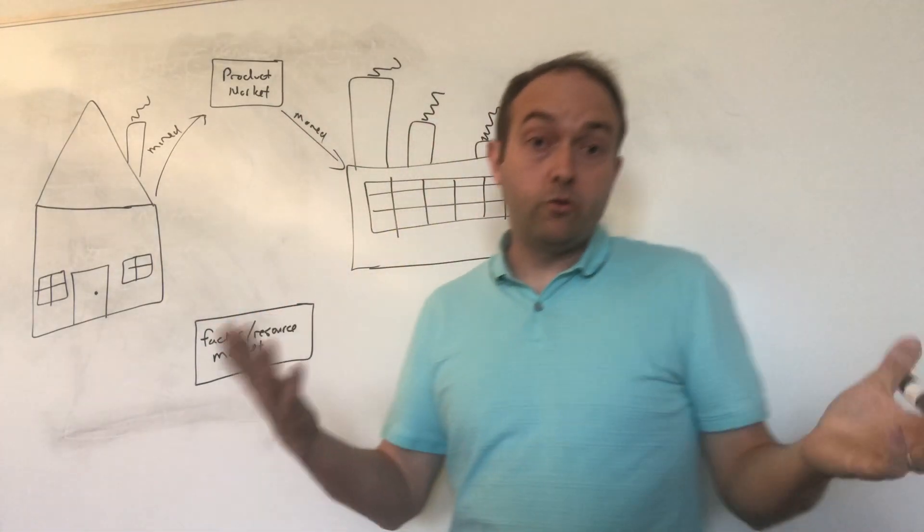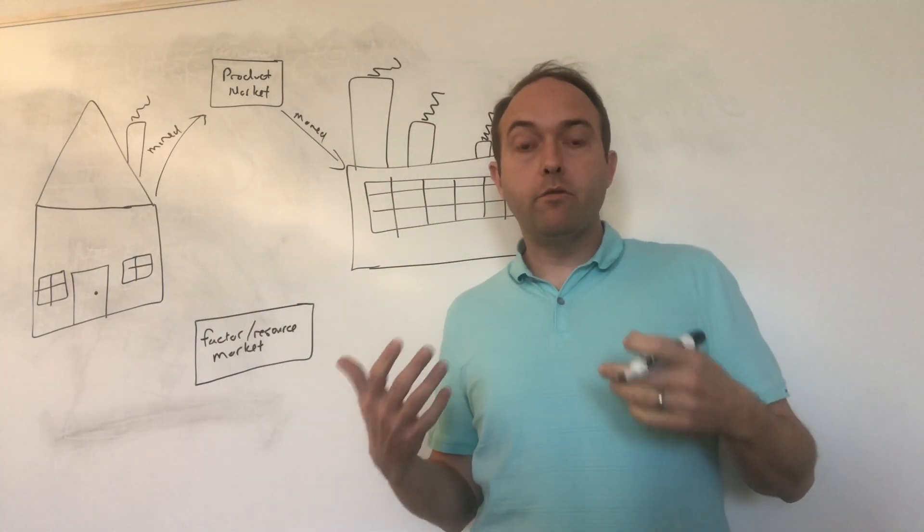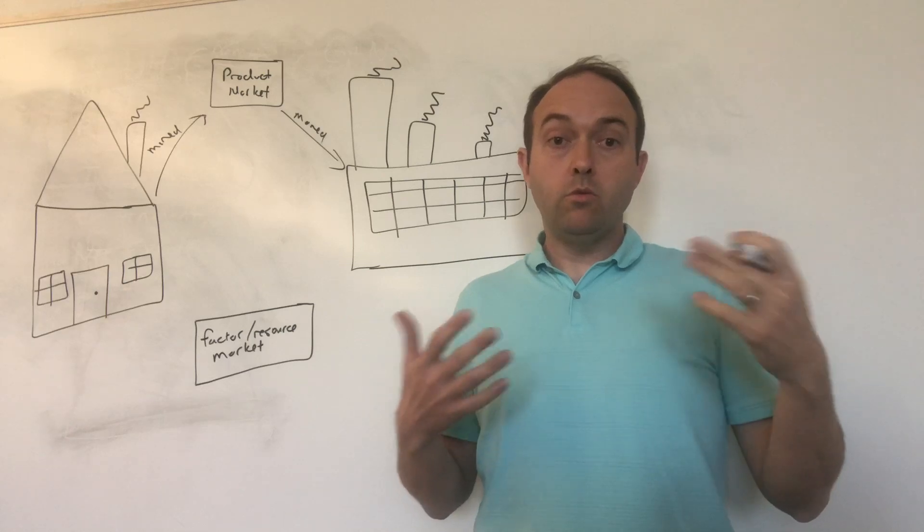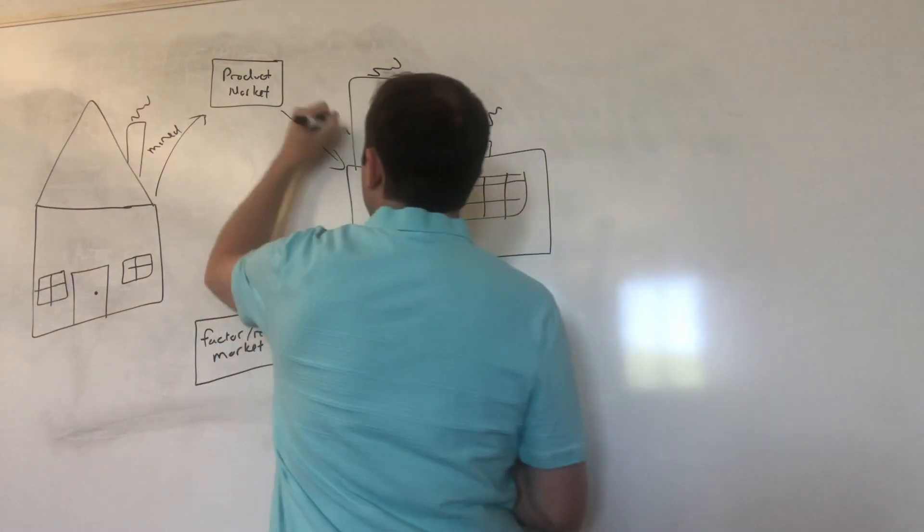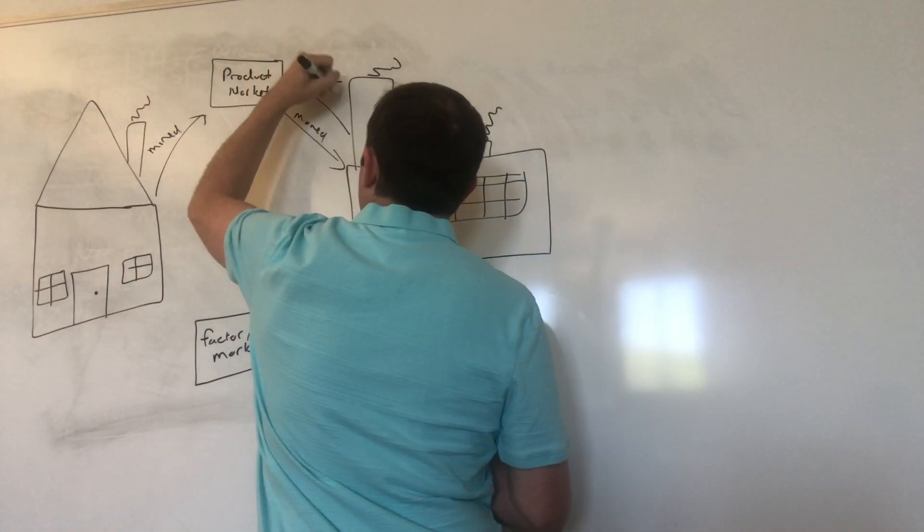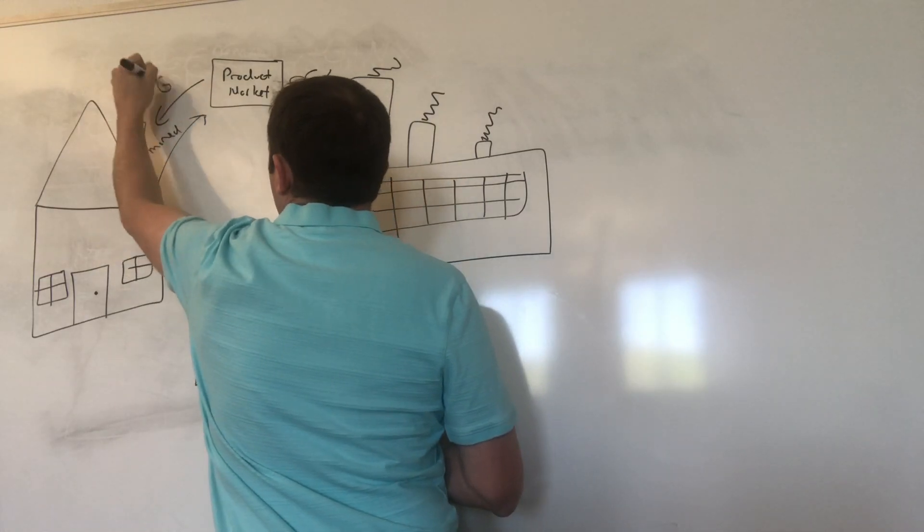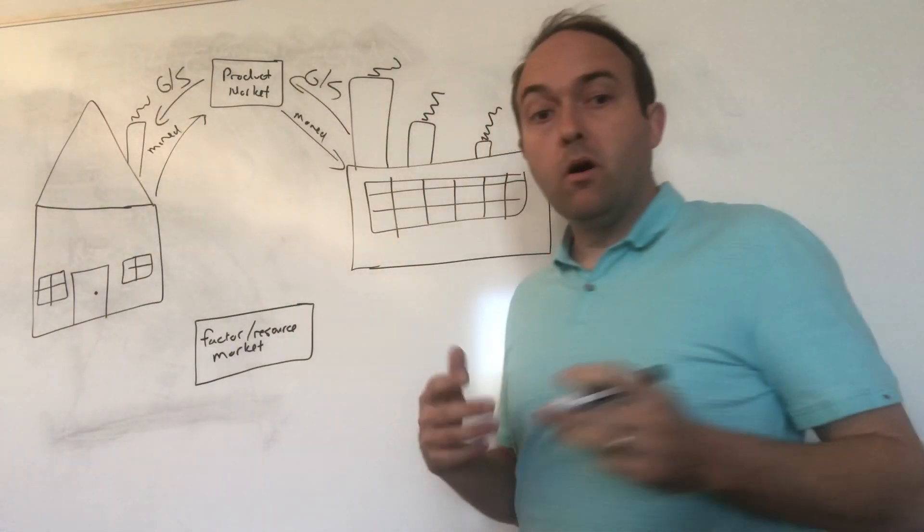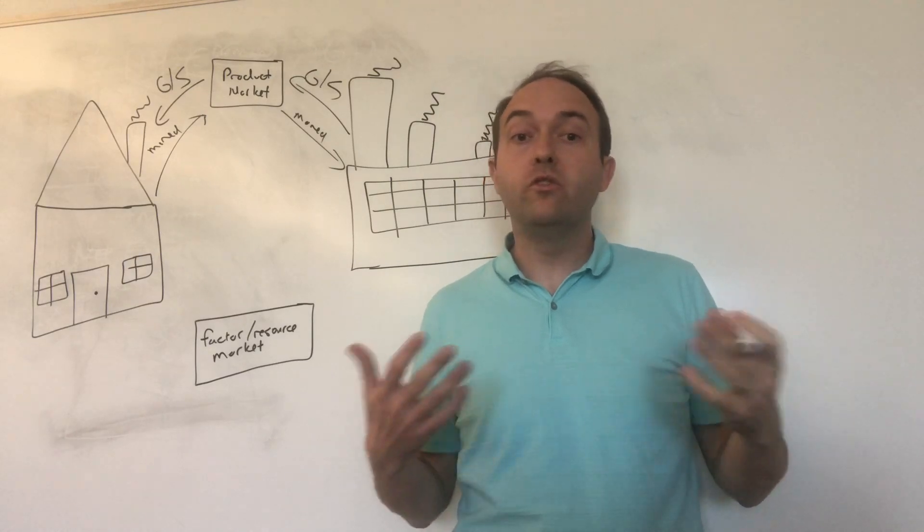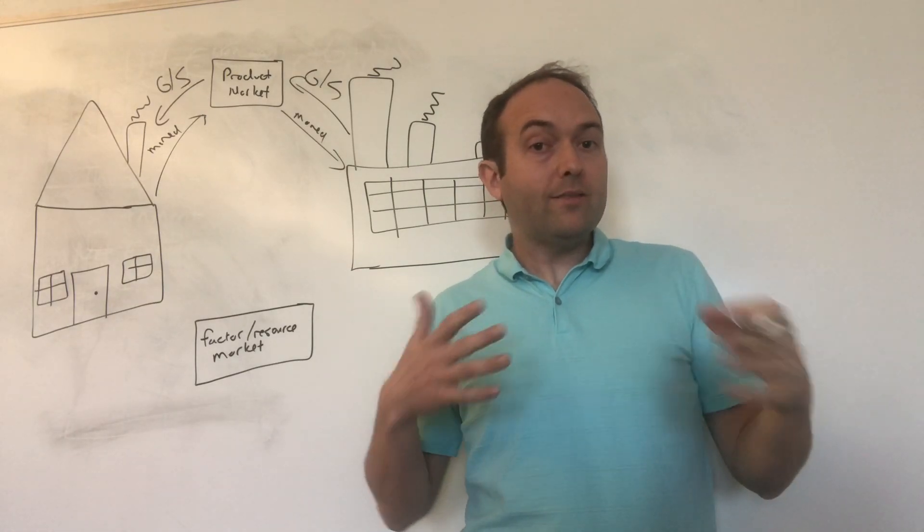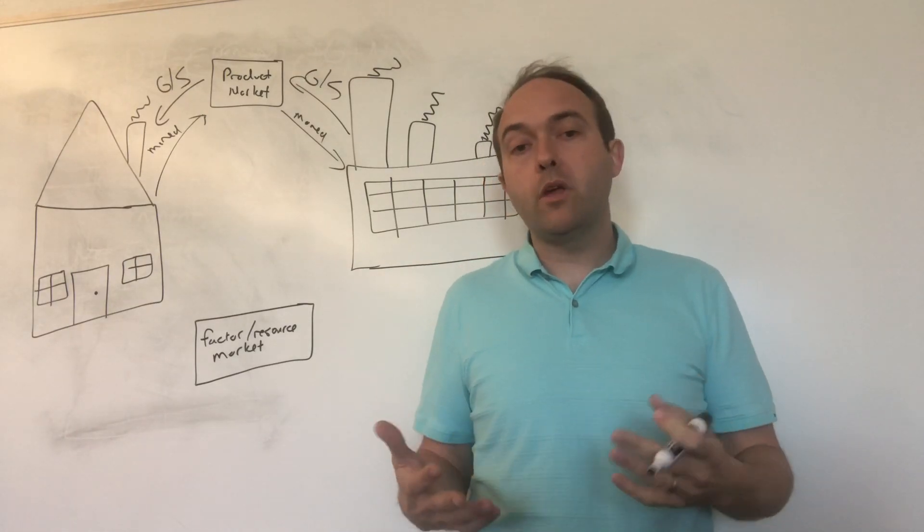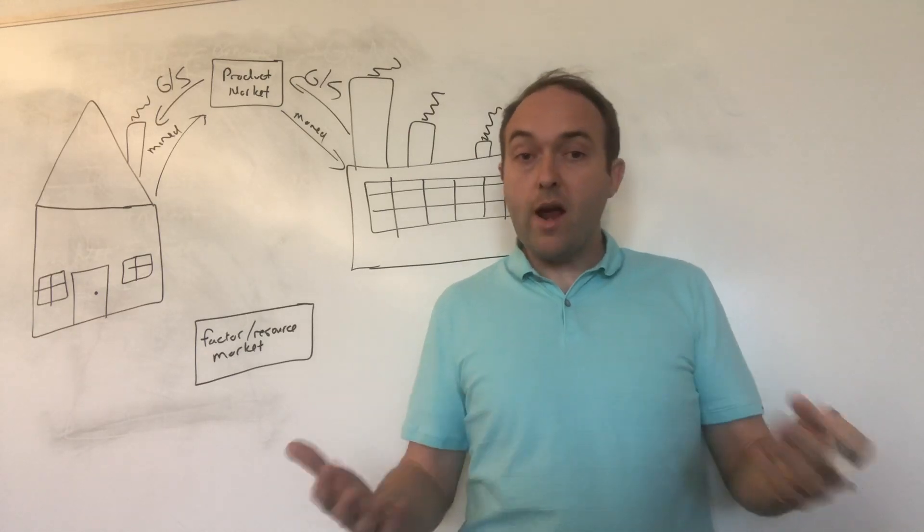And products, goods and services, flow out of the firm and into your household. I'm going to label that product with a G slash S meaning goods and services. So that's the main way that most people think about households and firms interacting.